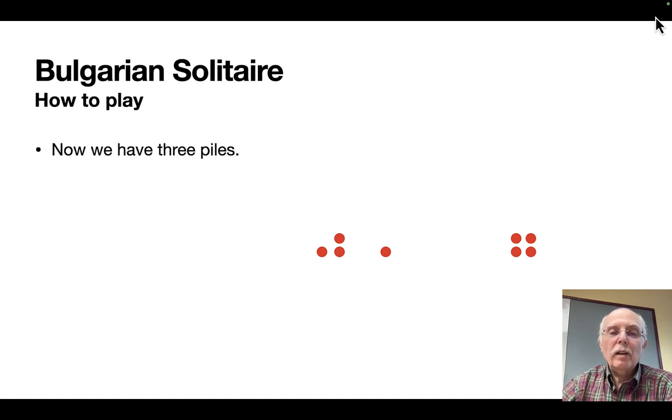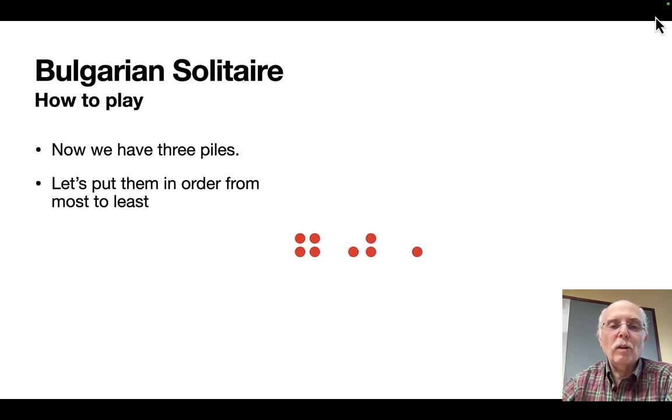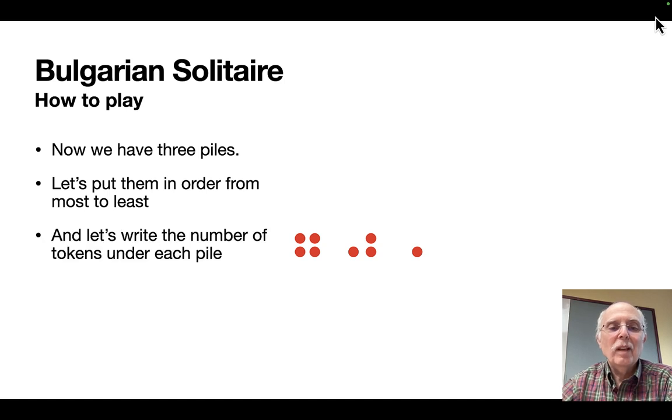Now we have three piles. I'm going to rearrange them so that the largest one is on the left and the smallest is on the right. And I'm going to write the number of tokens in each pile underneath the piles.